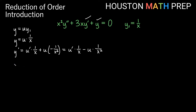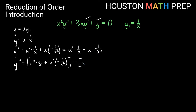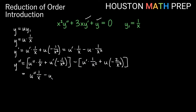For y double prime, both terms again require the product rule. The derivative of u prime times 1 over x gives u double prime times 1 over x plus u prime times negative 1 over x squared. Then the derivative of the second part gives minus u prime times 1 over x squared plus u times negative 2 over x cubed. Cleaning this up: y double prime equals u double prime times 1 over x, minus 2u prime over x squared, plus u times 2 over x cubed.